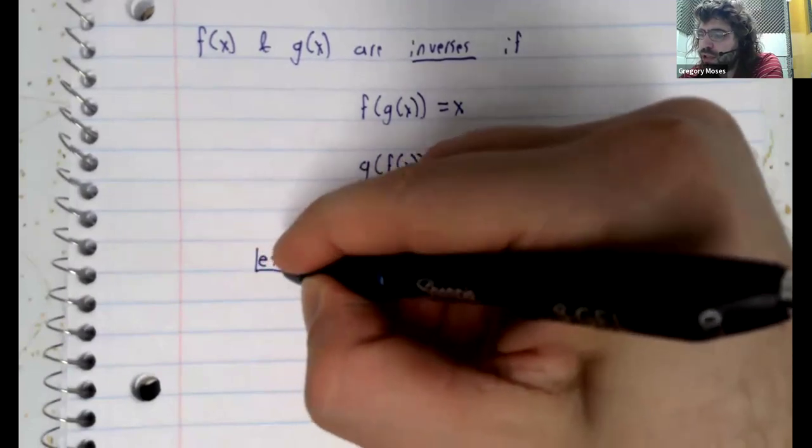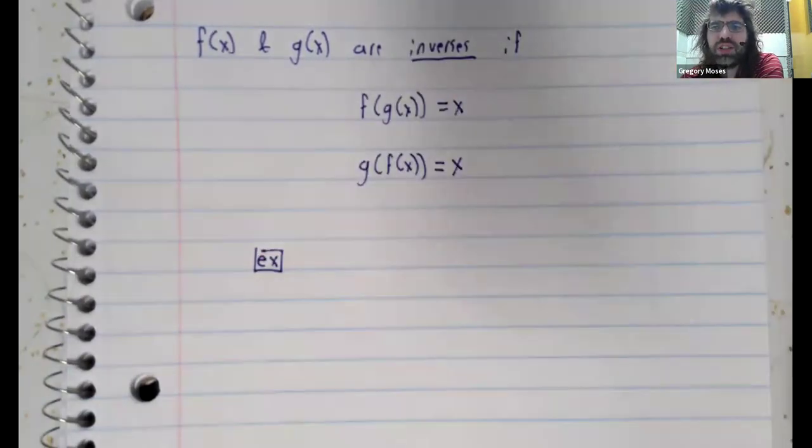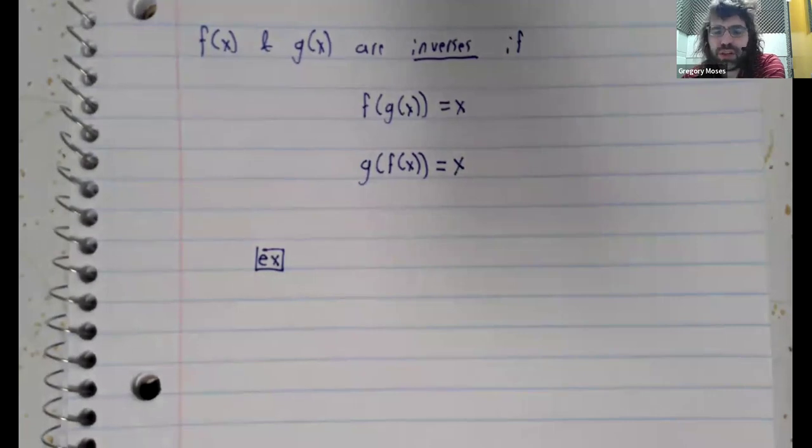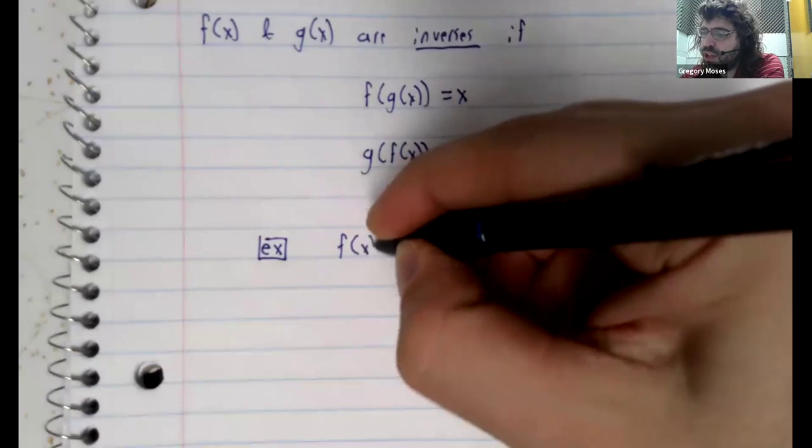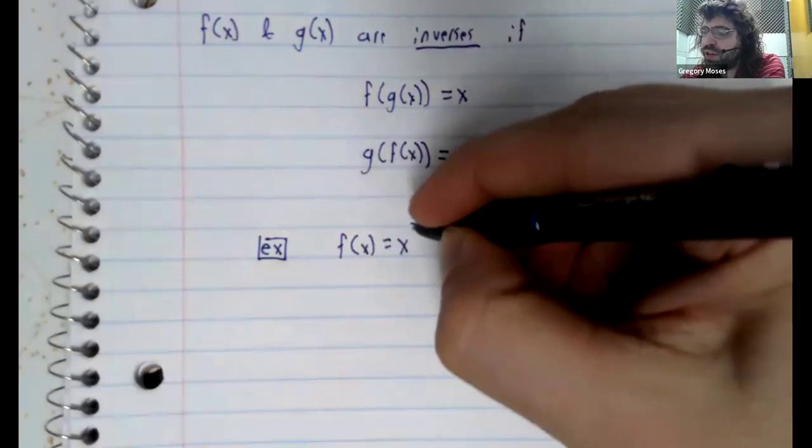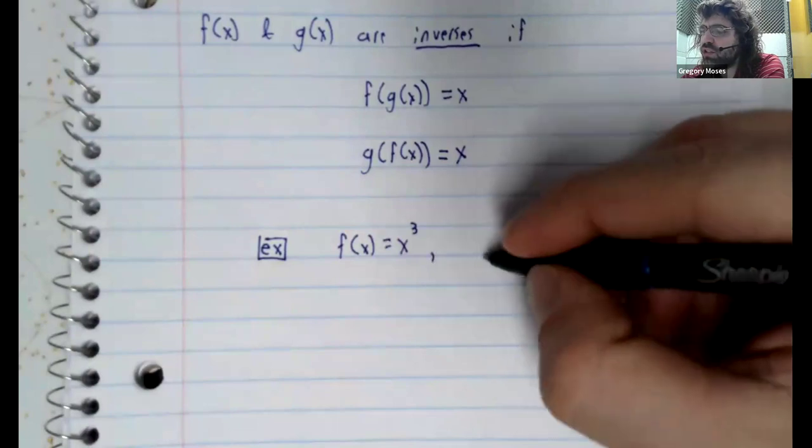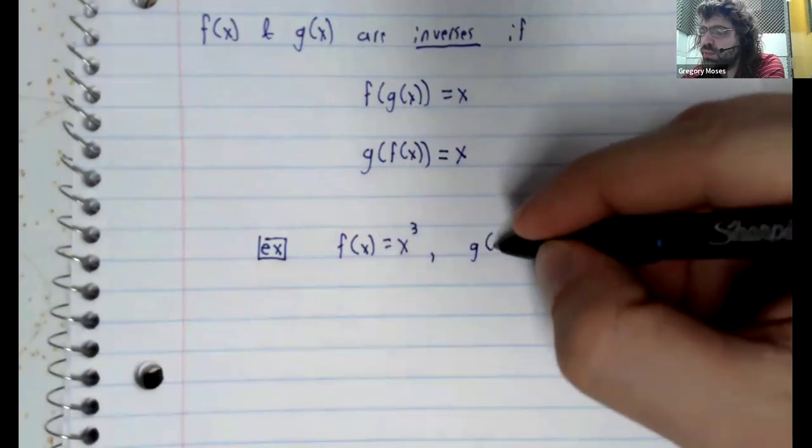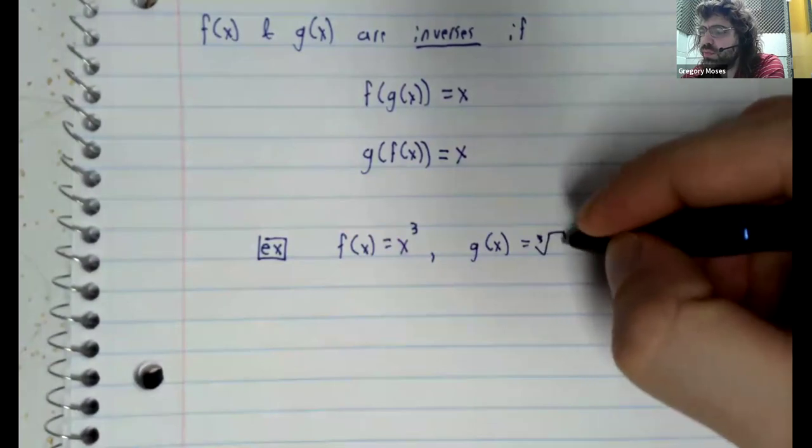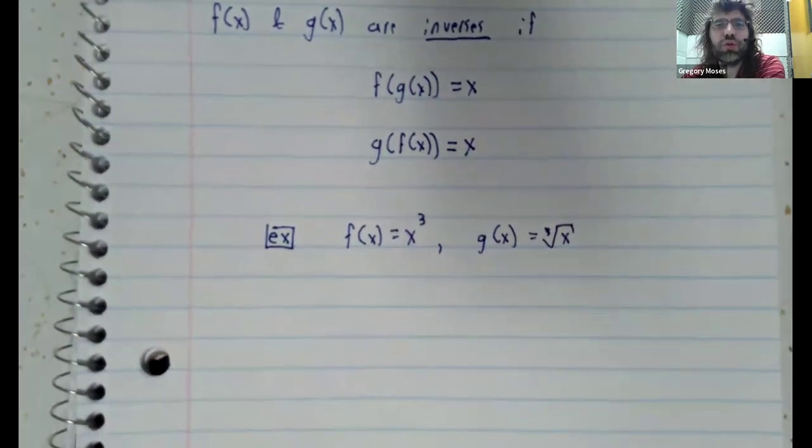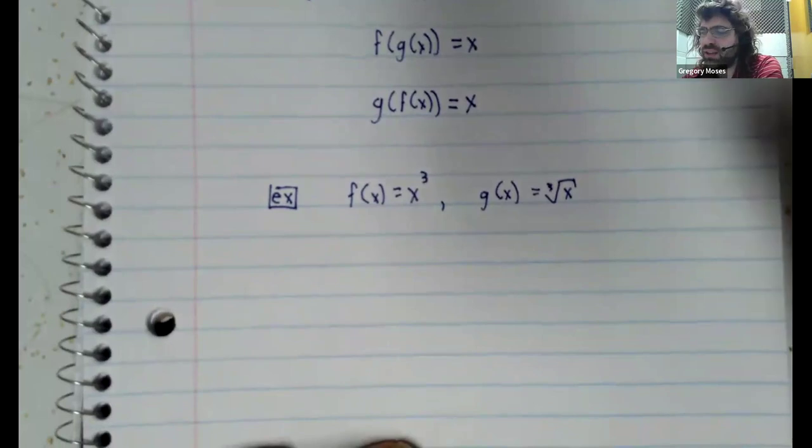And as a classic example of inverses, we can look at f of x equals x cubed and g of x equals the cubed root of x.